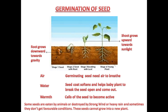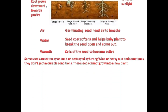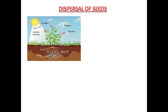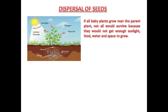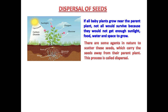Sometimes seeds don't get favorable conditions like air, water, and warmth. Before we learn about dispersal of seeds, notice that a parent plant takes sunlight, water, and minerals from roots for growth. But if all the baby plants grow near the parent plant, not all would survive because they would not get enough sunlight, food, water, and space. So nature requires agents to scatter seeds away from the parent plant.